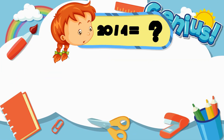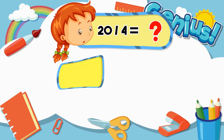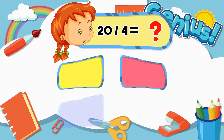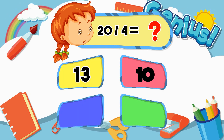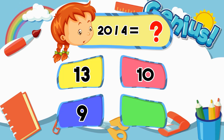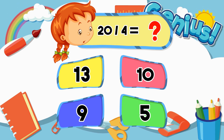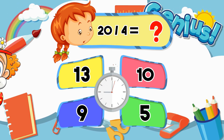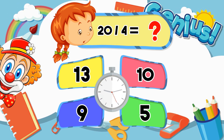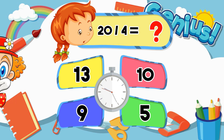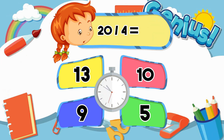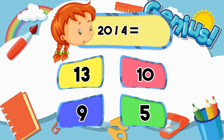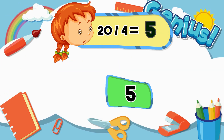What is 20 divided by 4? 13, 10, 9, 5. The answer is 5.